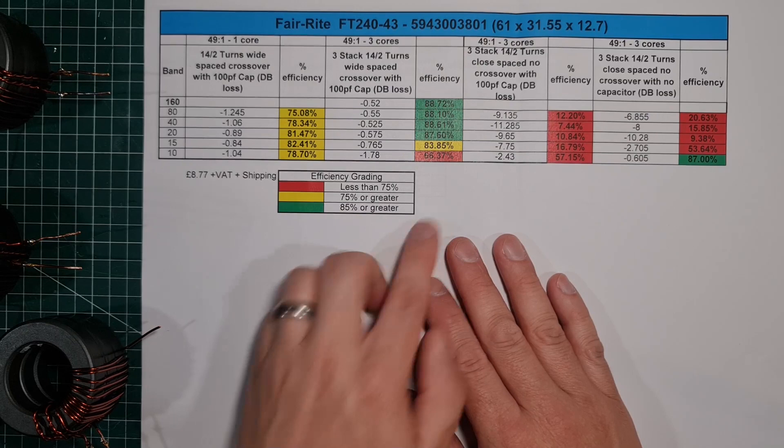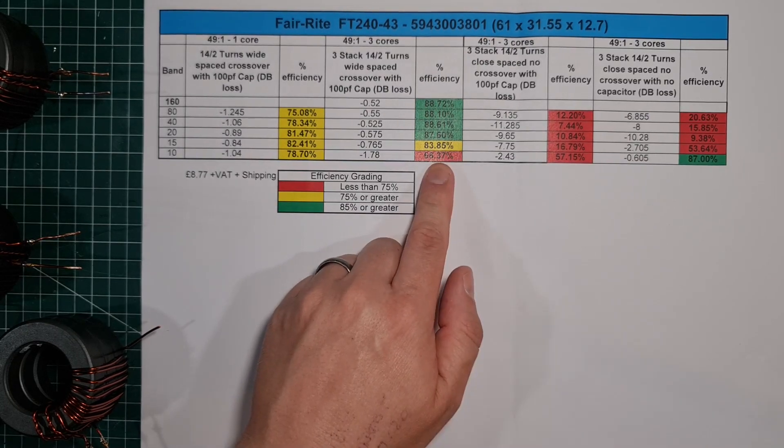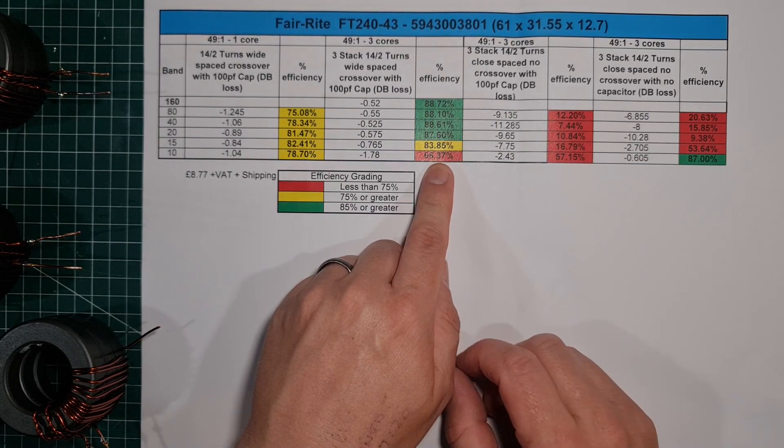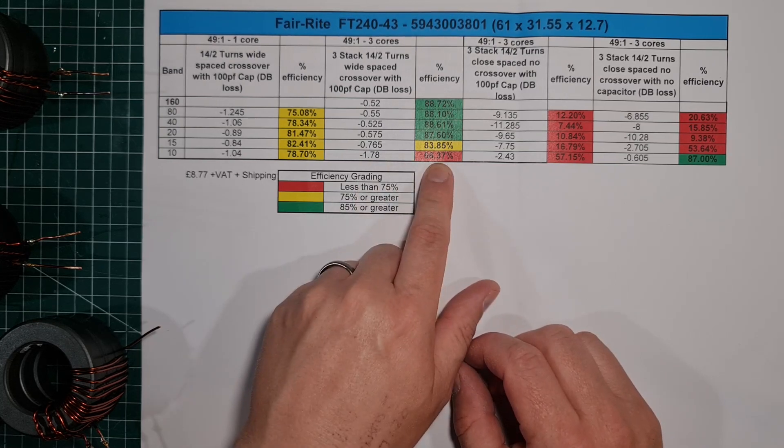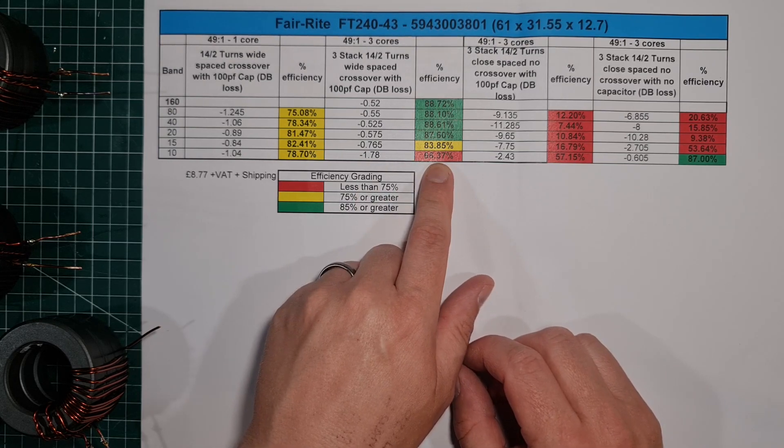Remember, everything's a compromise. When you start to look at 10, that's when the losses, for me, start to become a bit more, a bit greater. I mean, it's not terrible, but of your 100 watts, you're only going to get 66 watts out.